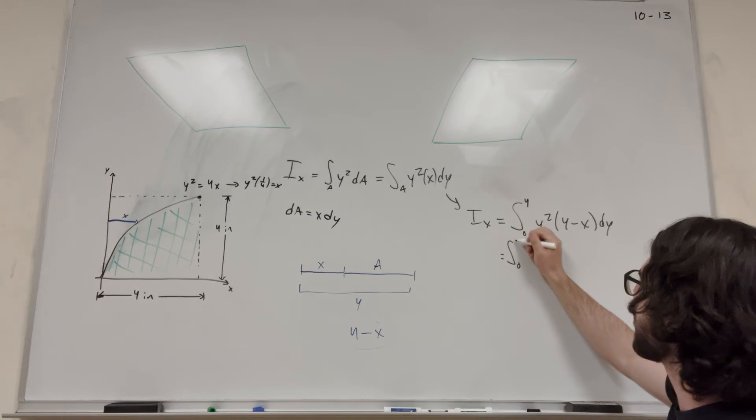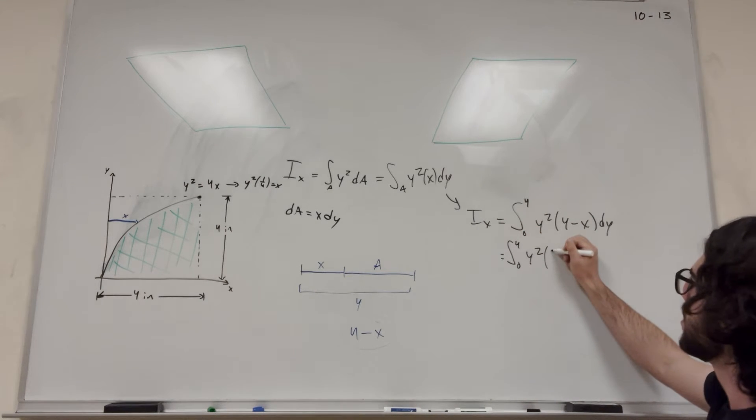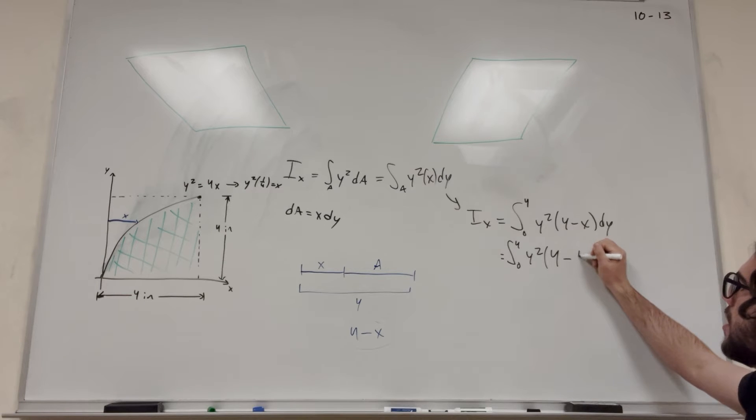So we can put that in for x. So this is the integral from 0 to 4 of y squared times 4 minus 1 over 4 y squared dy.